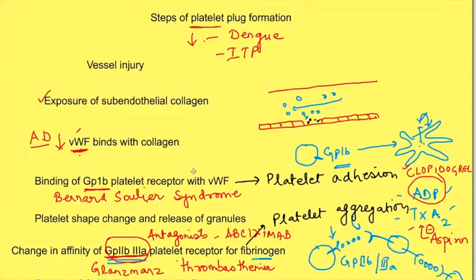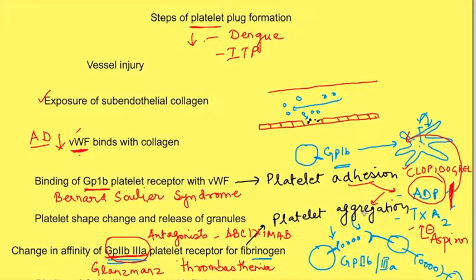How is platelet plug formation kept in check normally? This process is a positive feedback process — once platelet adhesion occurs, ADP and thromboxane A2 are released, causing platelet aggregation, which in turn activates further platelets. It is important that this process is kept in check at the site of vascular injury; otherwise, a massive platelet plug will form and keep enlarging.